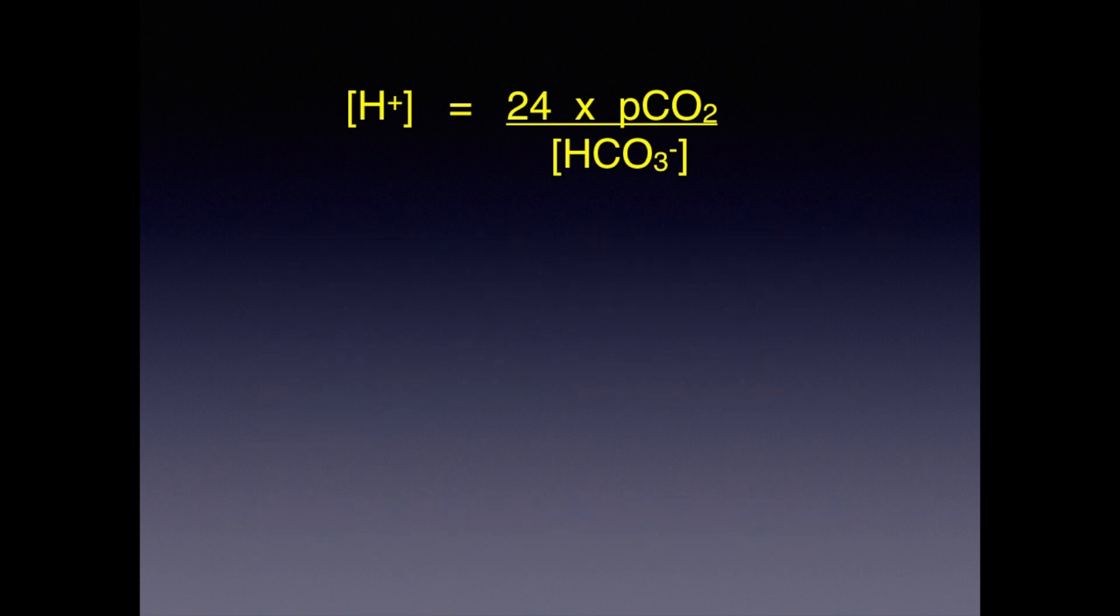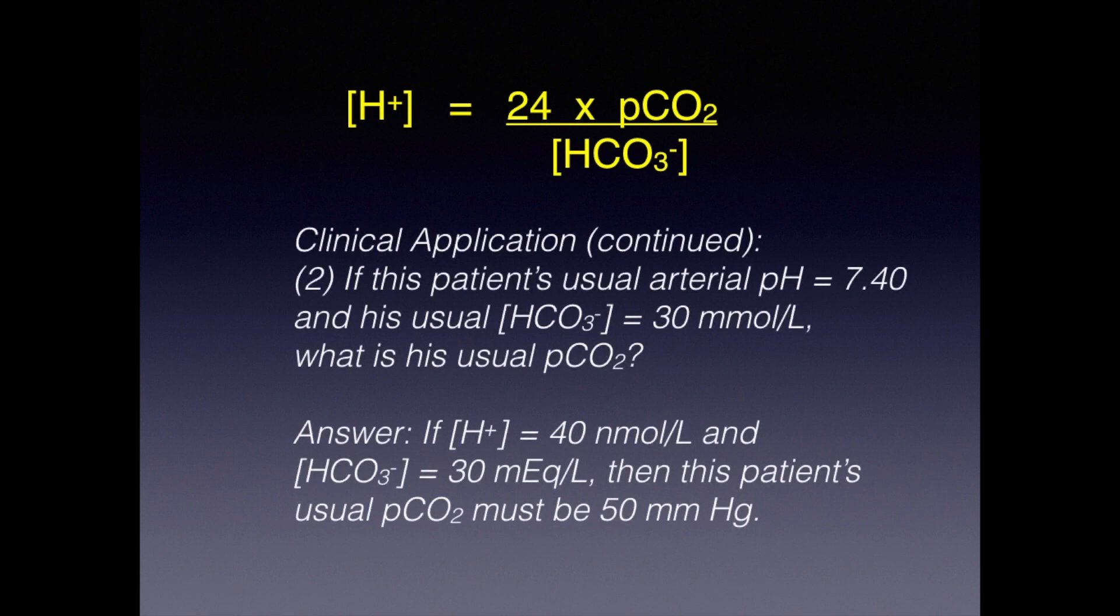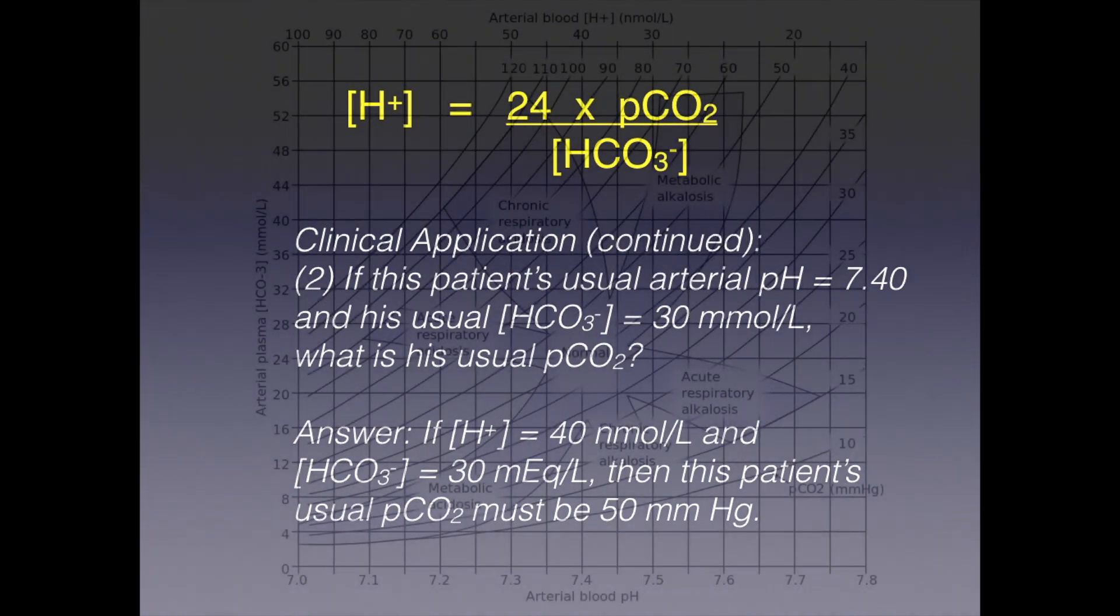If this patient's usual arterial pH equals 7.40 and his usual serum bicarbonate level equals 30 millimoles per liter, what is his usual pCO2? We can answer this second question by noting that with a usual hydrogen ion concentration of 40 and a bicarbonate concentration of 30, then using this equation, we find that this patient's usual pCO2 must be 50 millimeters of mercury. Note that our patient has an underlying chronic respiratory acidosis and compensated metabolic alkalosis.